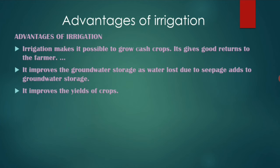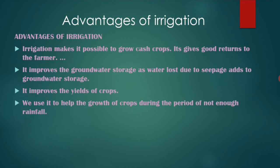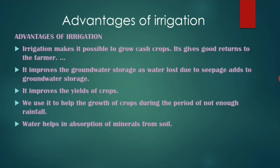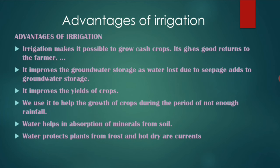Though due to evaporation this water is lost, irrigation supplies water to the plant and improves the yields of crops. It is used to help the growth of plants during periods of insufficient rainfall. Water also helps in the absorption of minerals from the soil, so minerals come along with water to the plant.